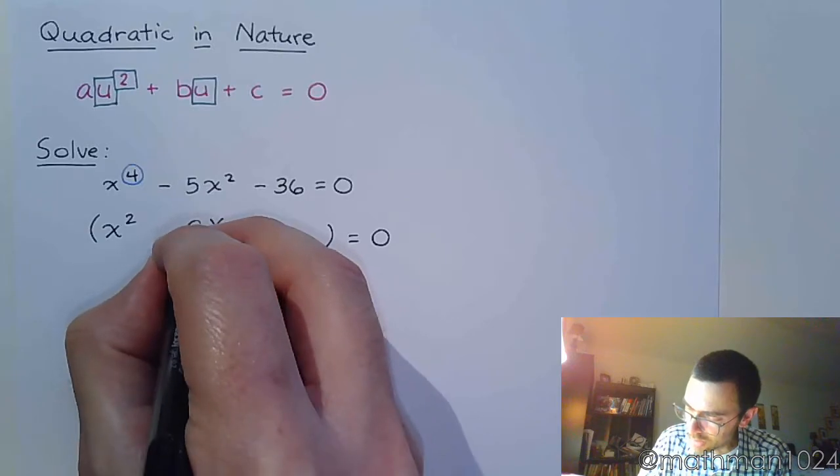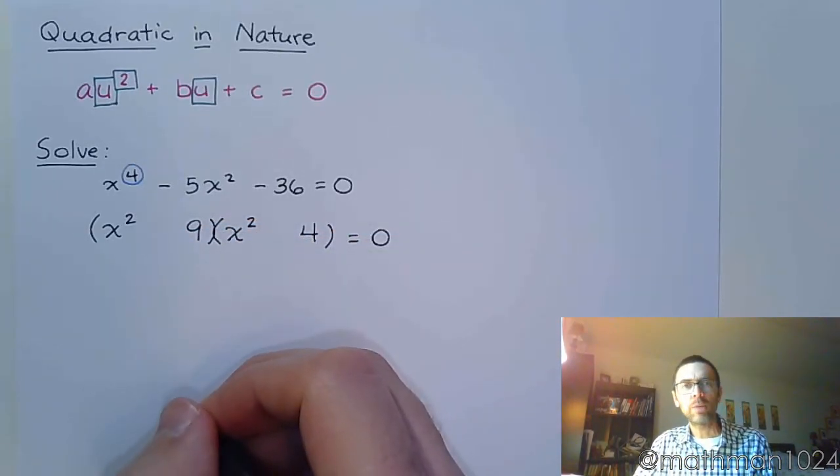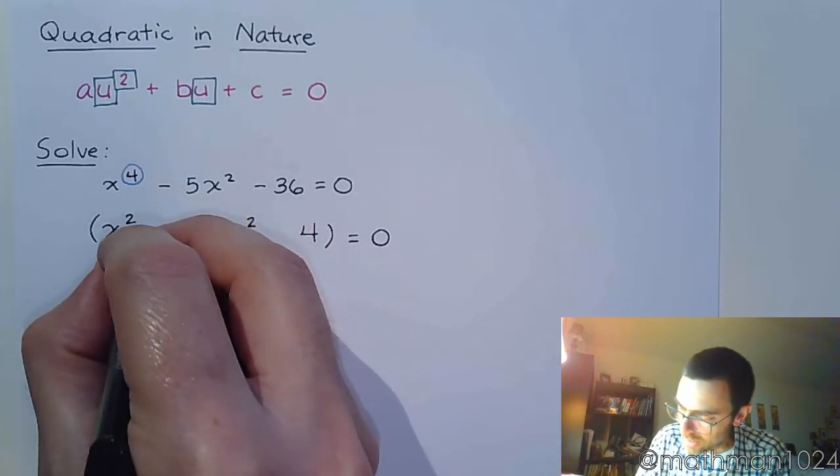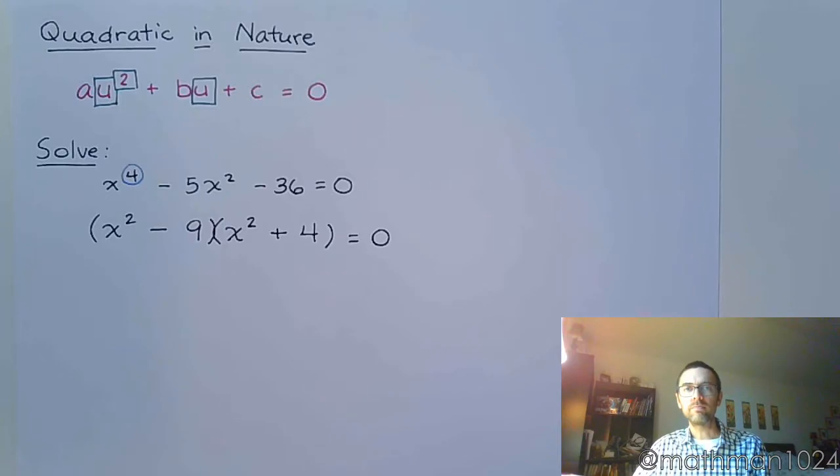And that's exactly what we're going to do. And then we treat the 36 just like we would always treat the 36. Try to find those factors of 36 that subtract to give you 5. Those factors, of course, being 9 and 4. Now, playing around with the signs, we know we need a negative 9 and a plus 4 here. So we've factored.